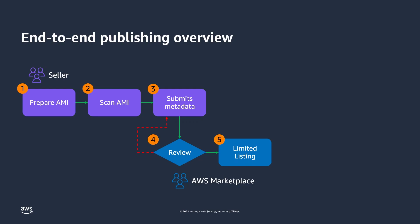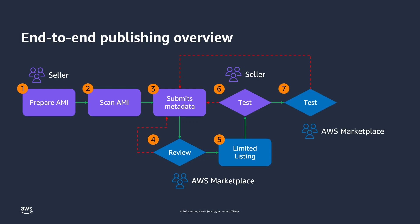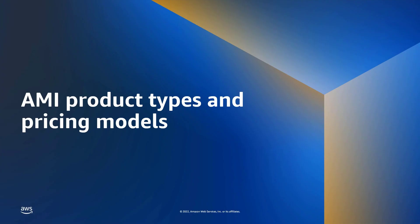At this point, only authorized accounts can view and subscribe to the staged product. Next, you'll test the limited listing to ensure the subscribe and launch processes work how you expect. AWS Marketplace also tests your product for policy and security compliance, software vulnerabilities, and product usability. When both parties approve the limited listing, AWS Marketplace turns the product to live in coordination with your schedule.